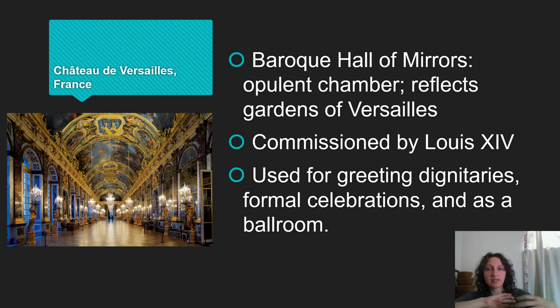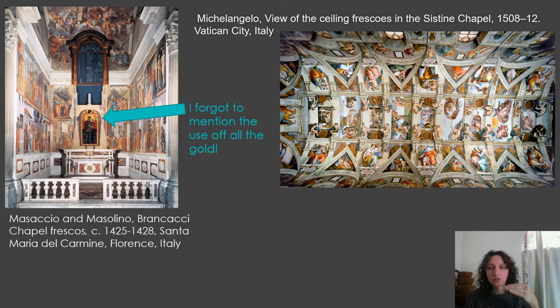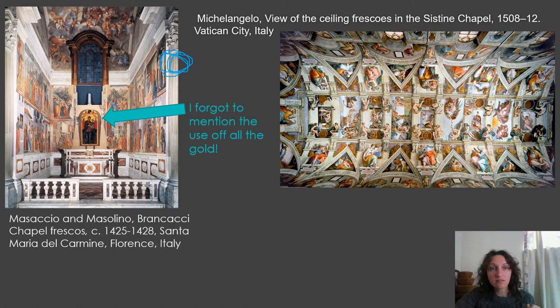I want to throw in these two throwback images so you can see where some of the inspiration for the Baroque Hall of Mirrors comes from — one from the early Italian Renaissance and one from the high Italian Renaissance. Some things to point out are all these frescoes, the way the windows are created, and then remember how we talked about the use of real architecture versus faux architecture — those fake architectural elements, especially on the Sistine Chapel ceiling.